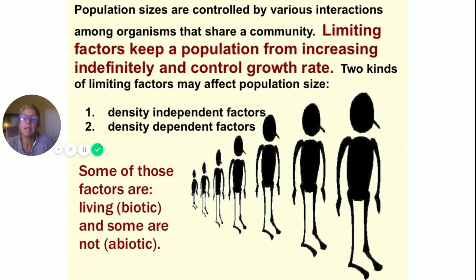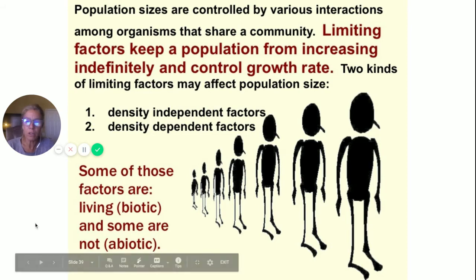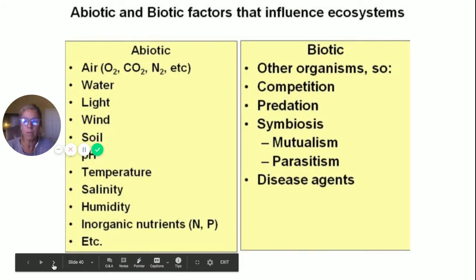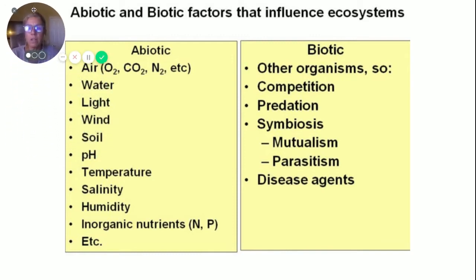Density dependent factors are more like the owls in my backyard — there are only so many nesting sites and only so much food. When you look at these factors, some are biotic (living), like whether they have enough food because of predators, and some are abiotic (non-living), like temperature or pH.